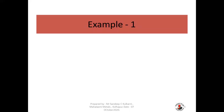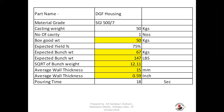Now we go to the first example of calculating casting pouring time. The casting is a DFG housing in material grade HGN 500/7. Casting weight is 50 kg, number of cavities is 1, so total good weight is 50 kg, and the expected yield is 75%.